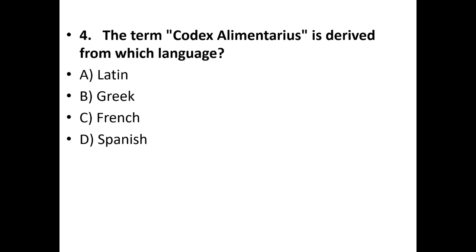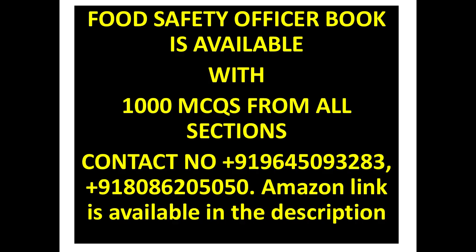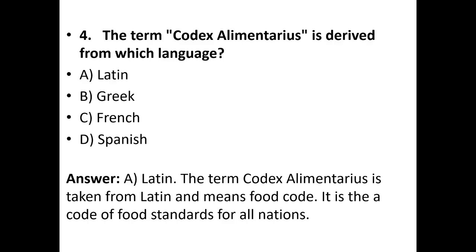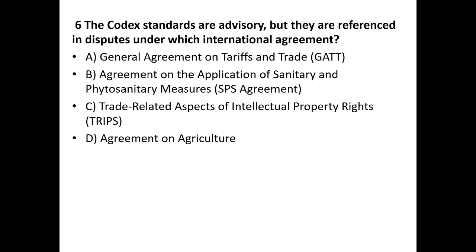Fourth question: The term Codex Alimentarius is derived from which language? Latin, Greek, French, or Spanish. The answer is option A — Latin. The term Codex Alimentarius is taken from Latin and means 'food code' — it is the code of food standards for all nations. Fifth question: What does Codex Alimentarius translate to in English? Food guide, food law, food code, or food standards? The answer is food code.